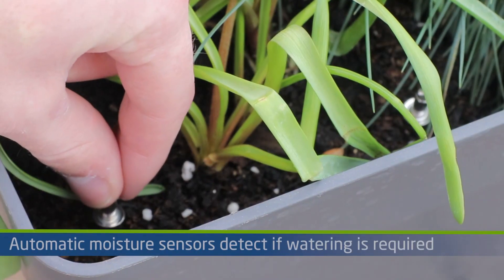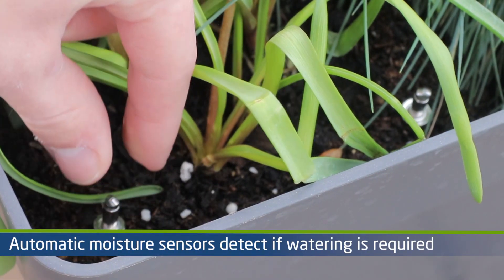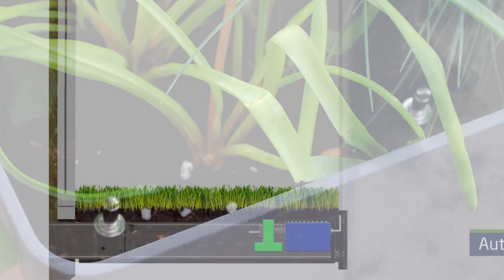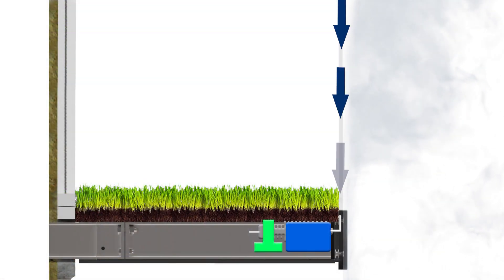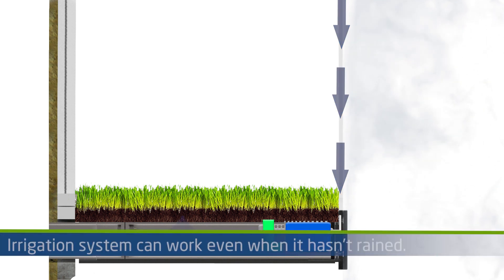The moisture sensor supplied in the plant pots of your Gardney detect if watering is required. Secondly, the micro holes in the sprinklers head capture the moisture in the air and harvest it, meaning the irrigation system can work even when it hasn't rained.